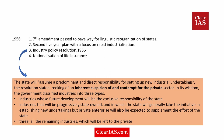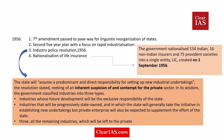Another major event in 1956 was the nationalization of Life Insurance. The government nationalized 154 Indian insurers, 16 non-Indian insurers, and 75 provident societies, combining them into a single entity — forming the LIC (Life Insurance Corporation of India) on 1st September 1956. Recently, of course, the government sold stakes in LIC, which is quite a contrast.